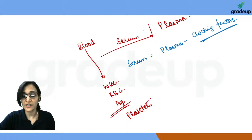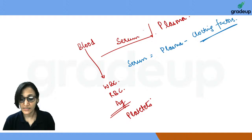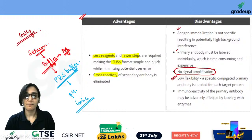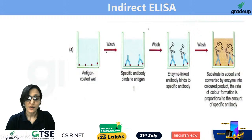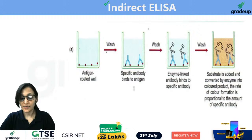So plasma minus clotting factor, or plasma minus fibrinogen, is serum. I hope this doubt is now cleared. If any doubt remains, don't worry — I can explain later as well.